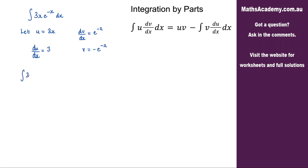We can now go ahead and use integration by parts on this original integral. So we get u multiplied by v — u and v are here — so we've got negative 3x·e to the minus x, minus the integral of v. Now v is negative here, so that makes this a positive. We've got 3 for our du/dx, bringing this outside the integral, and we're left with the integral of e to the negative x with respect to x.